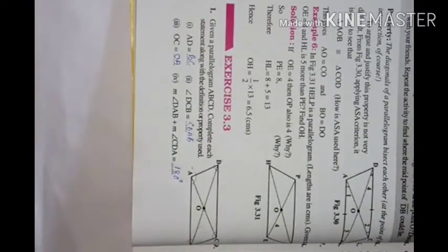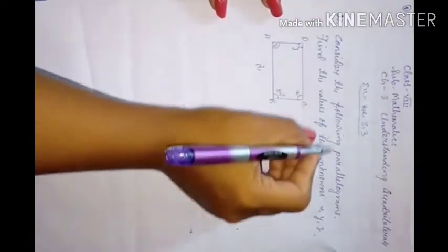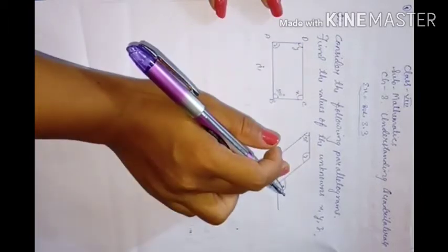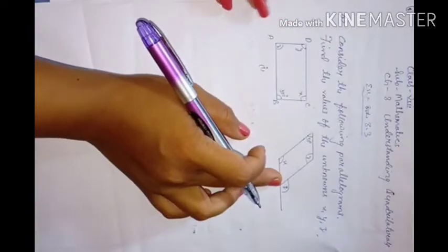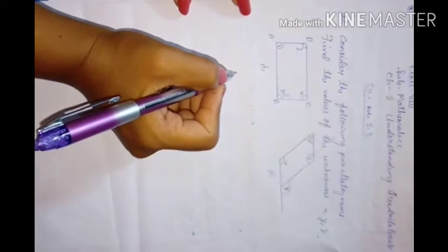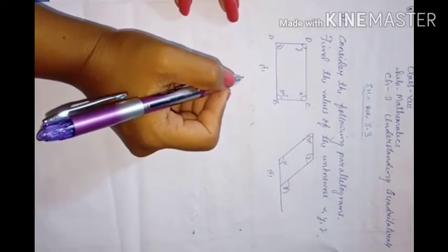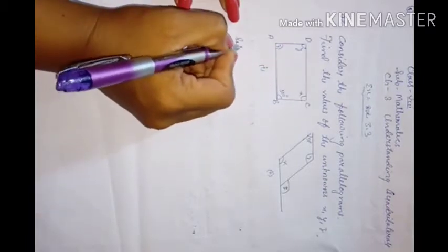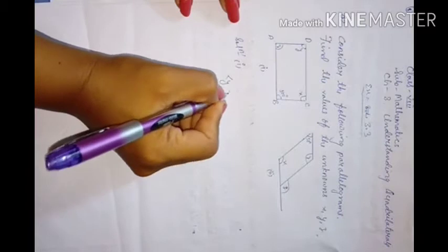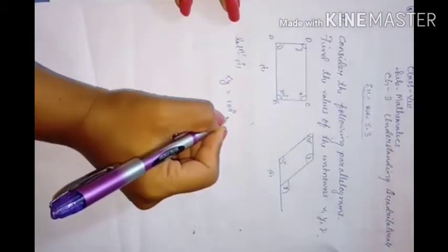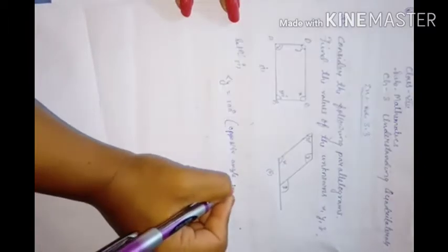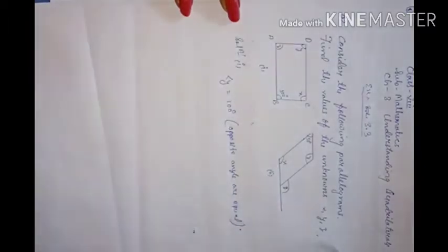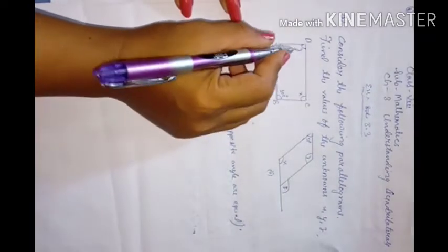Question number 2: Consider the following parallelograms and find the value of unknowns x, y, z. For the first figure, ABCD is a parallelogram. Opposite angles are equal, so angle y equals 100 degrees.